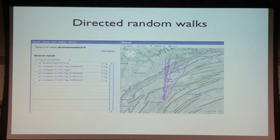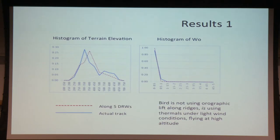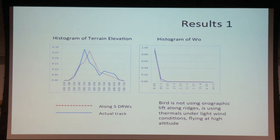Here, with five tracks — not enough, but just to illustrate the idea — five correlated or directed random walks from this point going north. Looking at histograms: terrain elevation is quite close between the actual and background tracks. I didn't bother with the thermal lift histogram because I don't trust it. Orographic lift selection is very close to background — not surprising because there's very little orographic lift available.